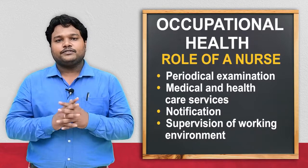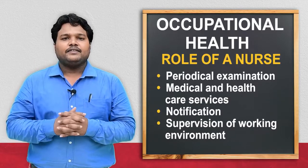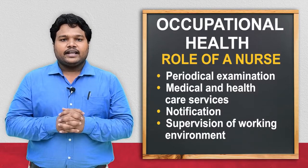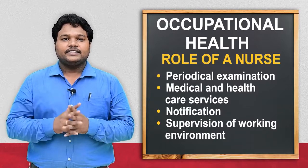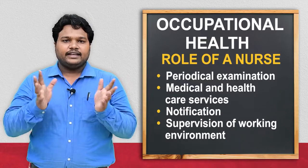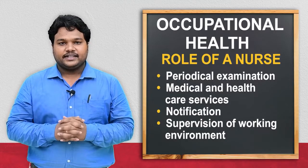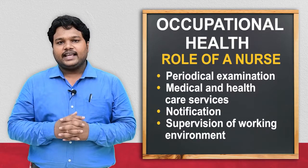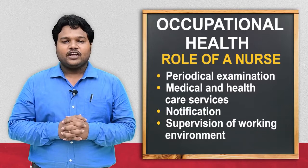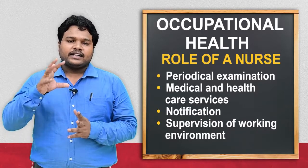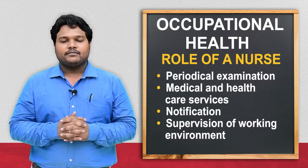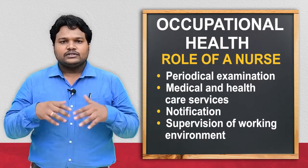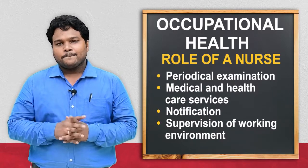For every 6 months, if you conduct periodical health assessments, you can easily identify what problems occupational workers are suffering with. The next role is medical and health services. In every organization, there should be proper medical and health services. You may know about the ESI Act — the Employees' State Insurance Act — passed by the Government of India, which provides medical benefits, sickness benefits, and maternity benefits for women.